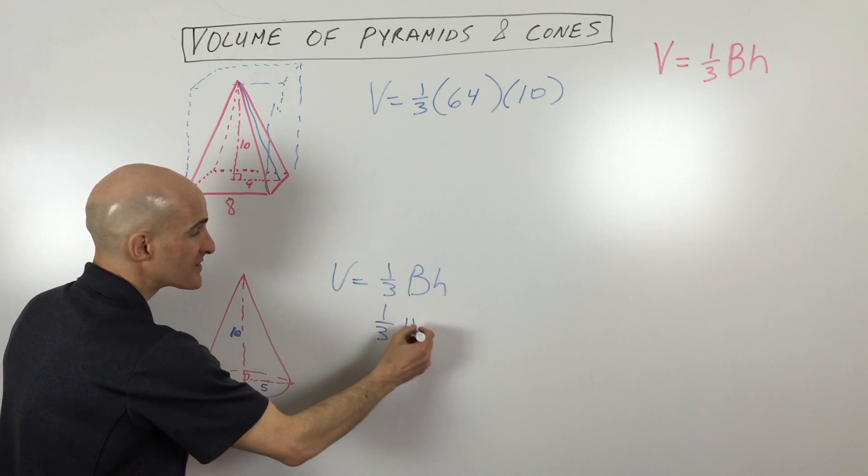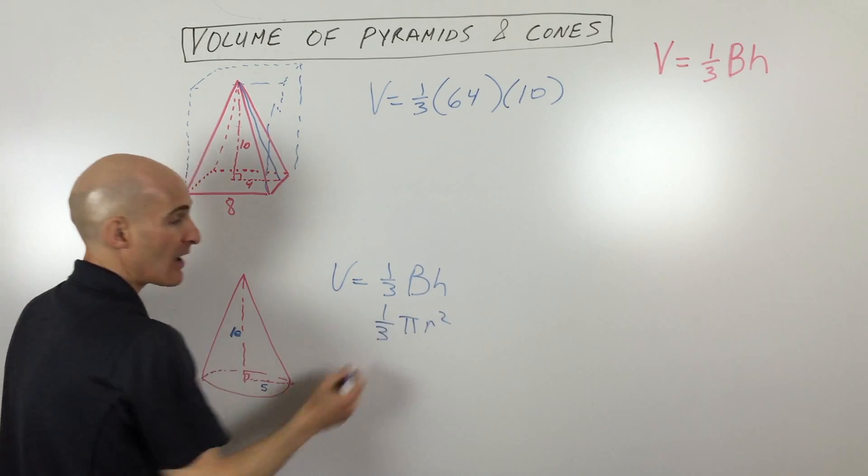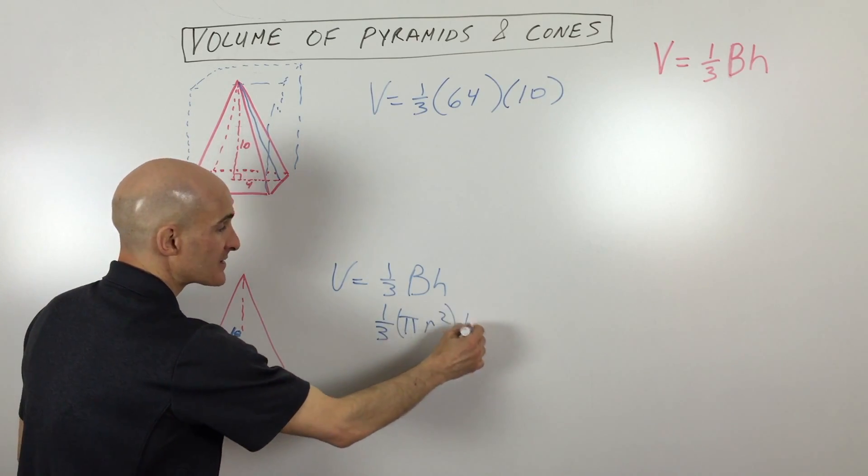So you just have to think, this is a circle. What's the area of a circle? Pi r squared. So that's the base right there times the height.